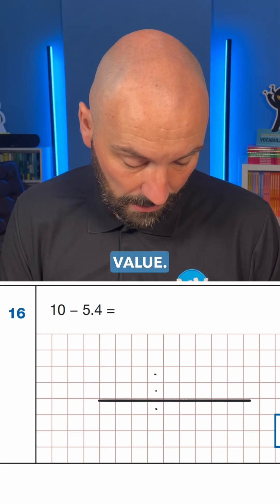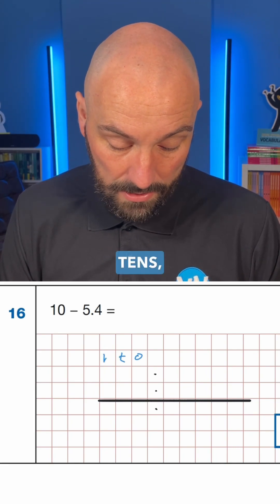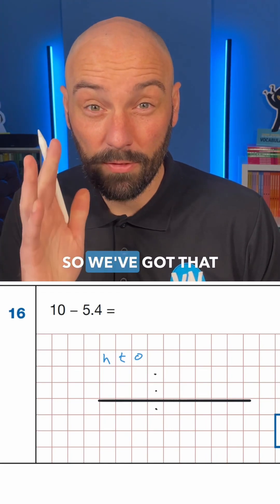What this does is creates place value, so we now have our ones, tenths column, tens, hundreds, and everywhere else, so we've got that alignment.